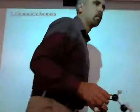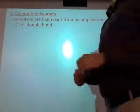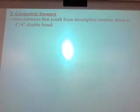These are called geometric isomers, by the way. Geometric isomers, and they are stereoisomers that result from incomplete rotation about a carbon-carbon double bond. So they're stereoisomers again, but they're not due to the fact that you just have a different arrangement around a chiral carbon.